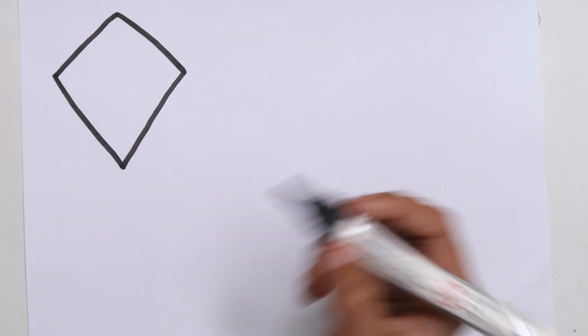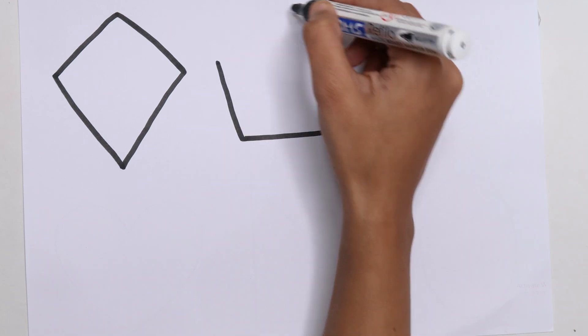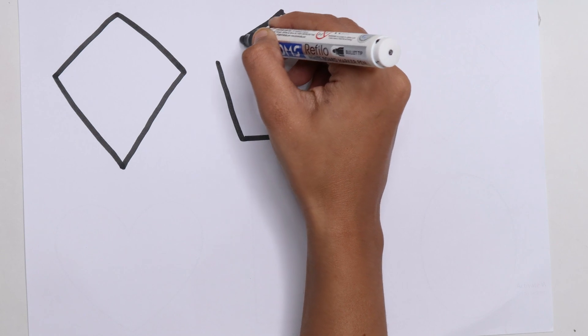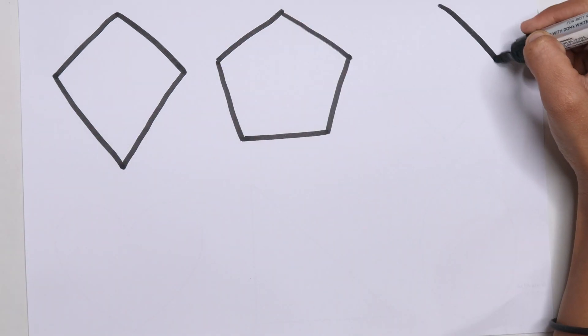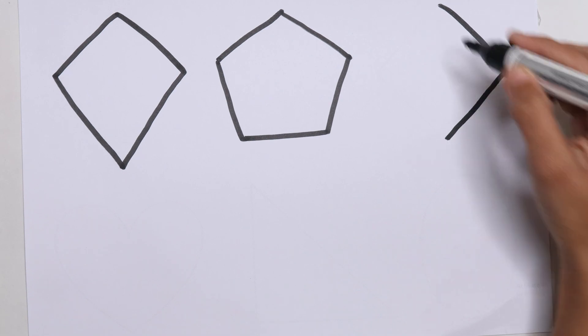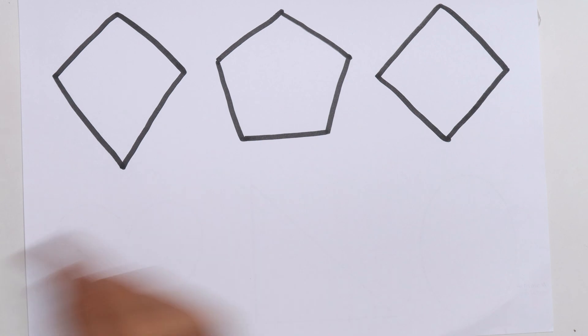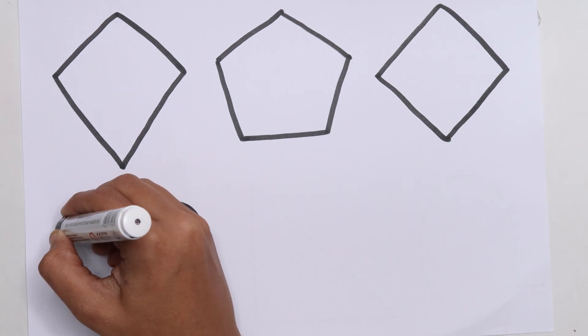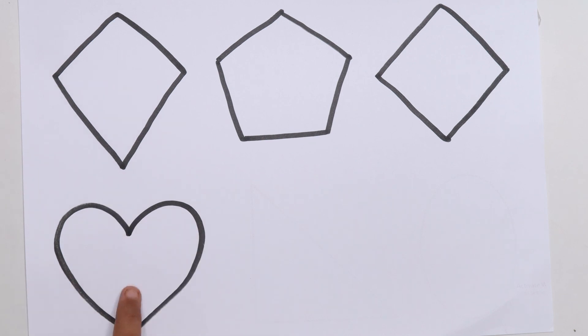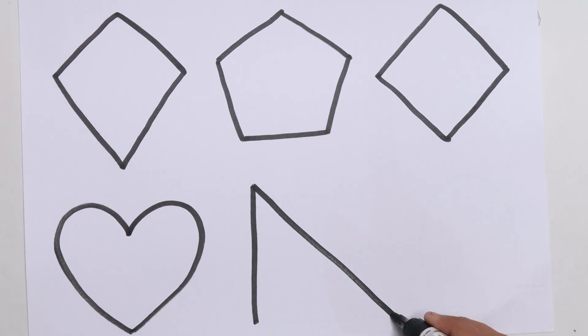Kite. Pentagon. Rhombus. Heart. Right Triangle.